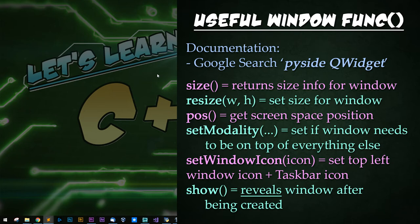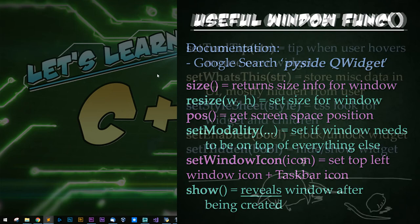Set modality: set if the window needs to be on top of others. Set window icon: sets the top left window icon as well as the taskbar icon. Set window title: sets the window's title, of course. And show, which we've already gone over.